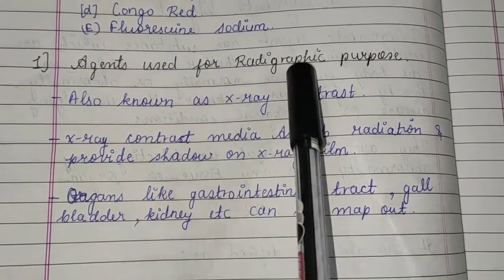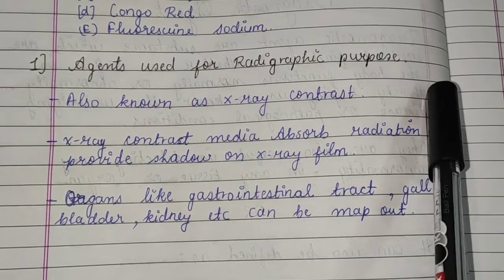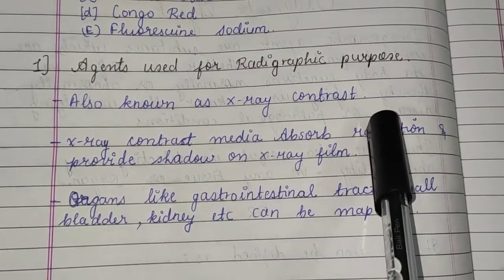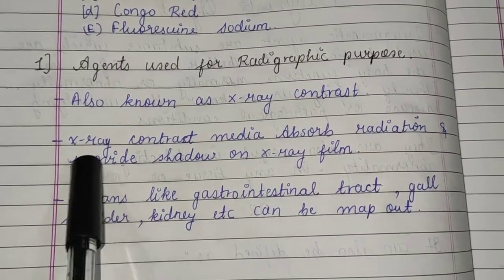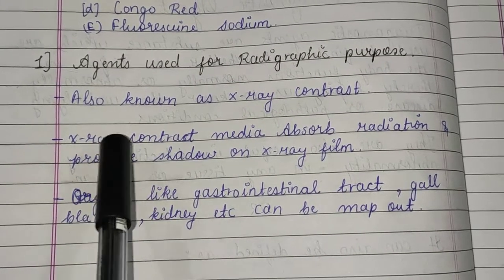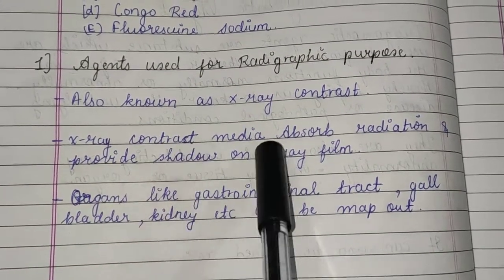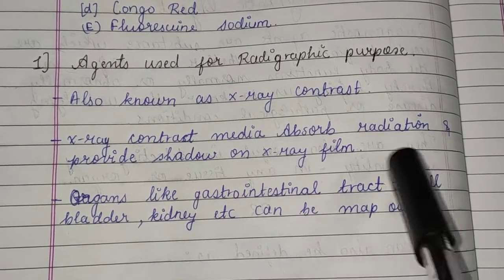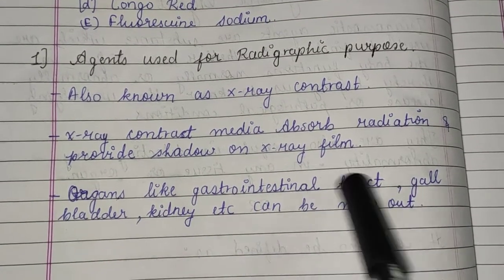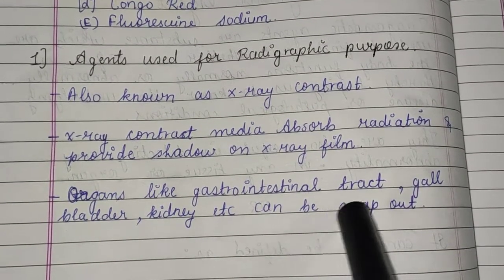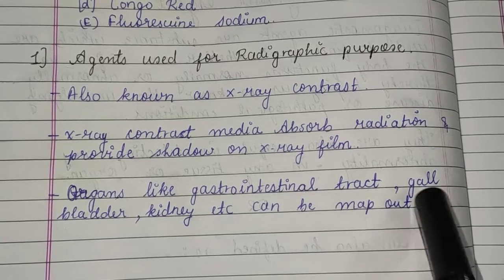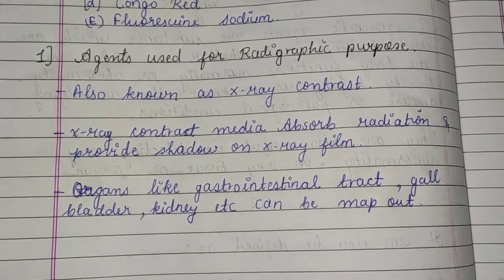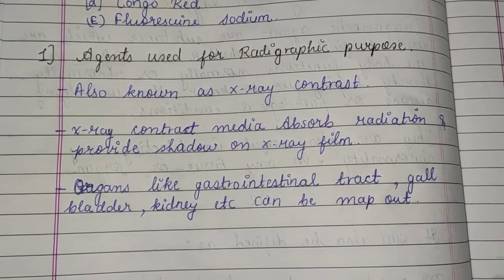Agents used for radiographic purpose are also known as X-ray contrast media. They absorb radiation and provide shadow on X-ray film. Organs like the gastrointestinal tract, gallbladder, kidney, etc., can be mapped out.